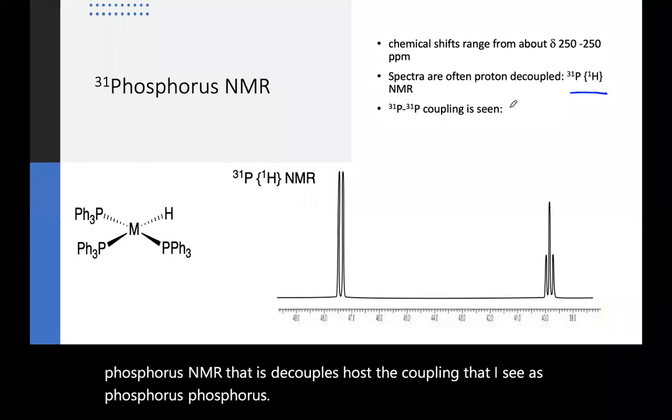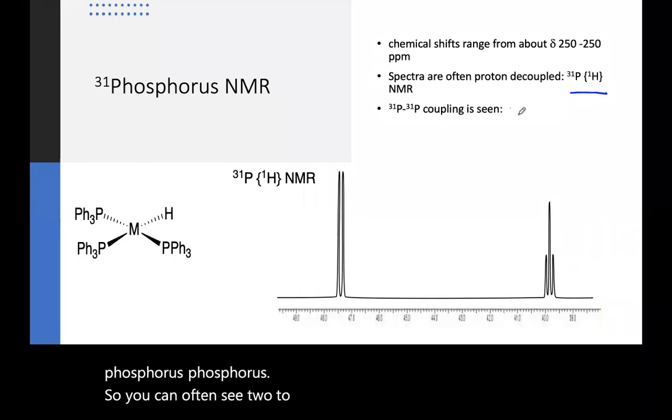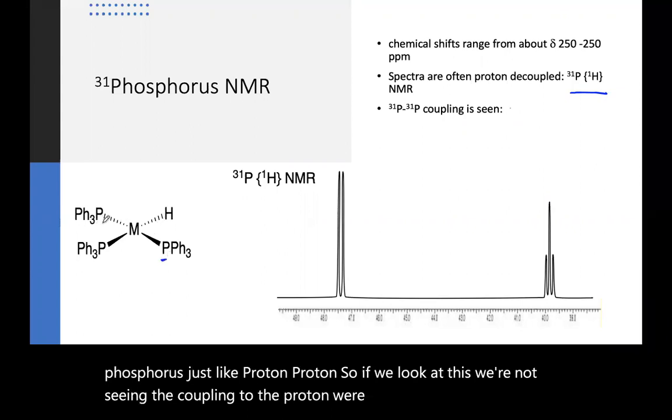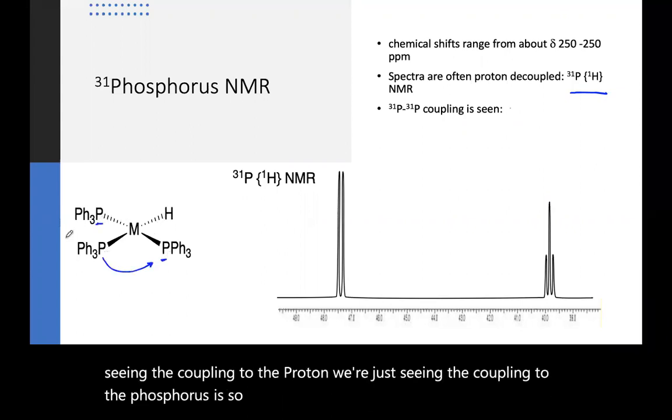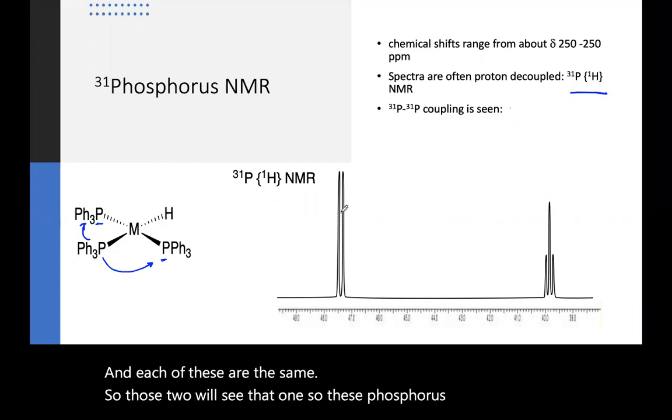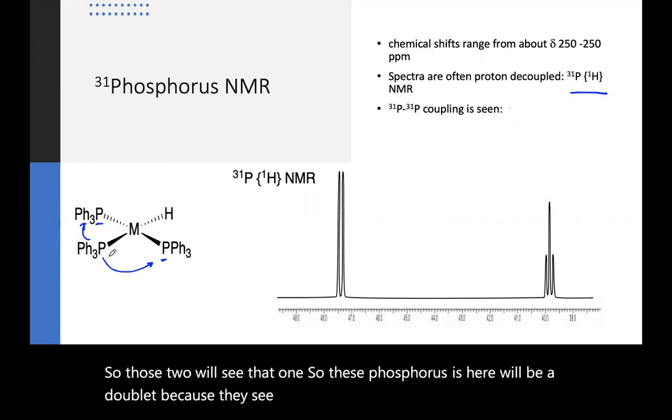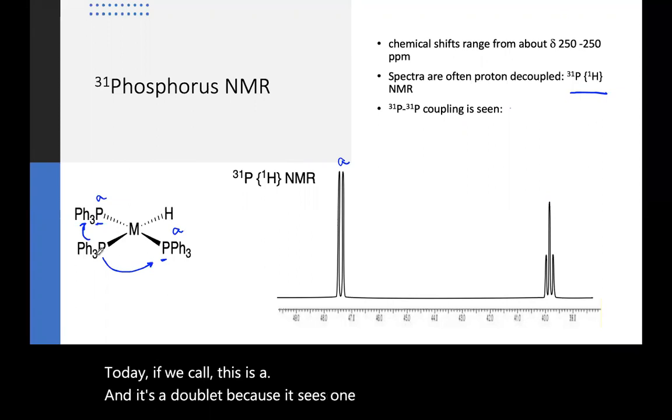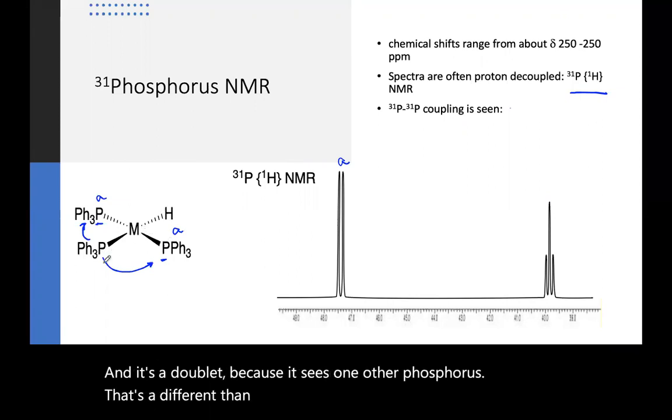So you can often see two to three bonds with phosphorus-phosphorus, just like proton-proton. So if we look at this, we're not seeing the coupling to the proton, we're just seeing the coupling to the phosphorus-phosphorus. So this phosphorus can see both of those two, and each of these are the same. So those two will see that one. So these phosphorus here will be a doublet because they see that one.